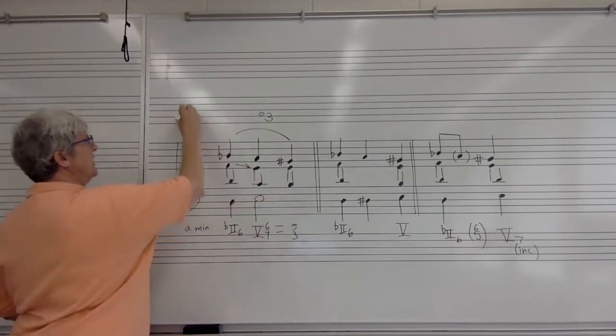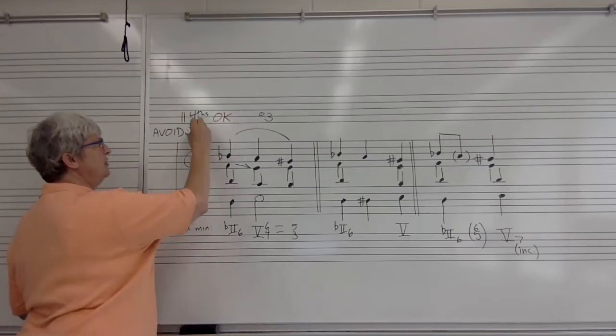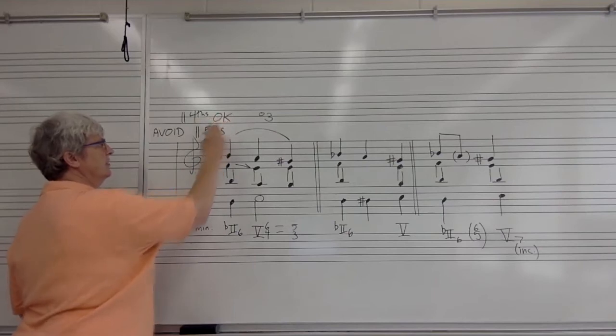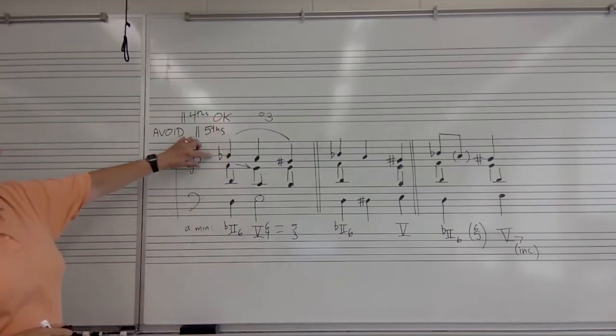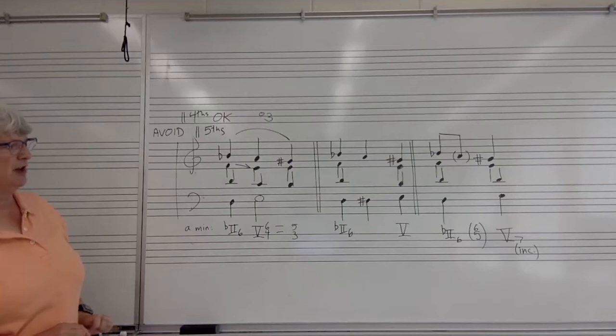Notice here that I have parallel fourths, which are okay, but you must avoid parallel fifths. So if the B-flat were below the F and we went to the fifth AE, we would have parallel fifths. That's something for you to watch out for.